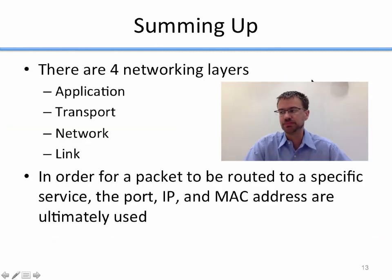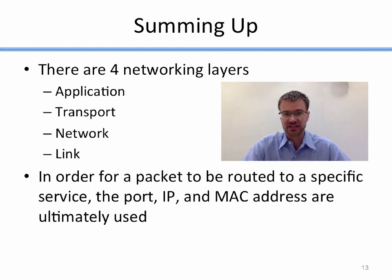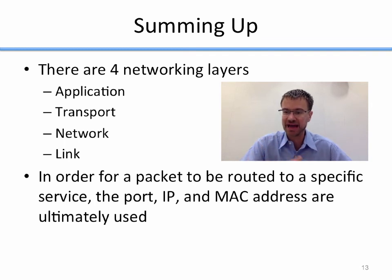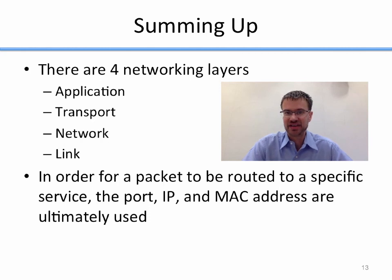To sum up this brief networking overview: there are four networking layers — application, transport, network, and link. In order for a packet to be routed to a specific service, the port, IP, and MAC address are ultimately used. The MAC address is only used for local and next-hop routing, whereas the port and IP address are used for more global routing to get the packet to the right machine and the right application on that machine. In the next lecture, we'll talk about port scanning itself. Thanks.